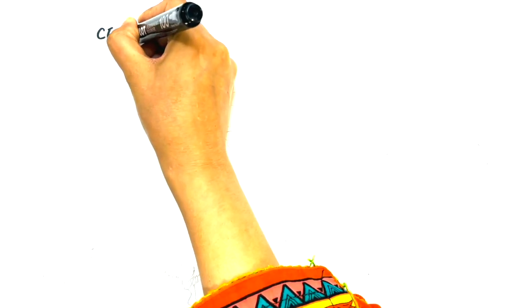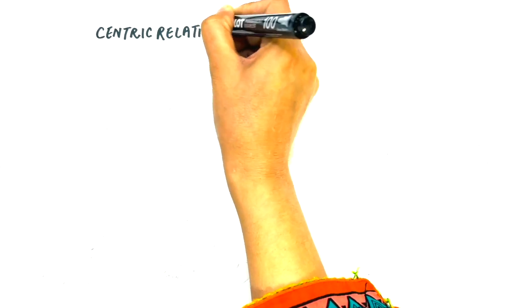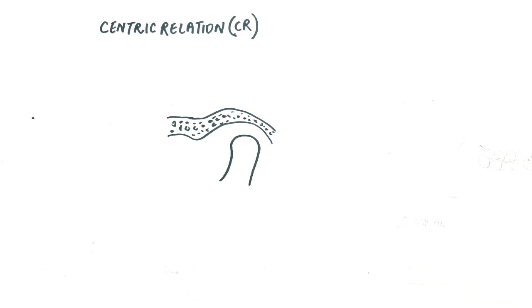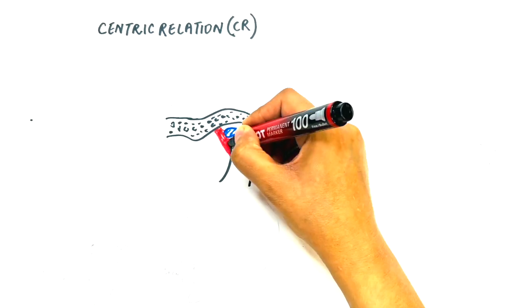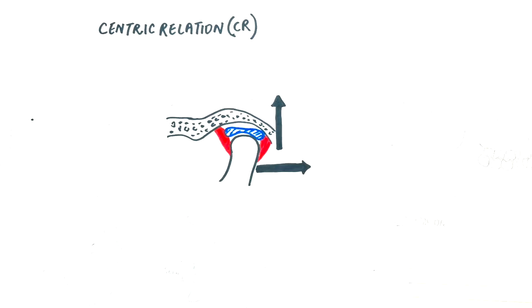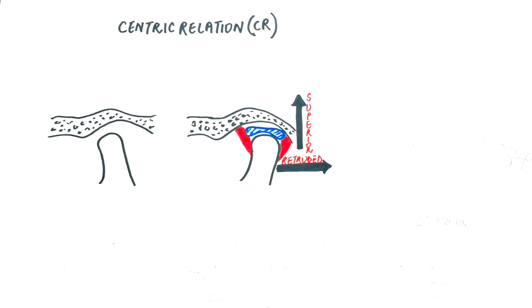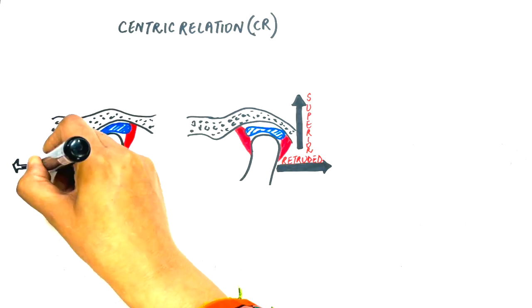Centric relation is a core topic of dentistry in general and prosthodontics in particular. The term has become thoroughly confusing because of many conflicting definitions. Its definition has changed several times over the past half-century from a retruded posterior and superior condylar position to an anterior superior condylar position.